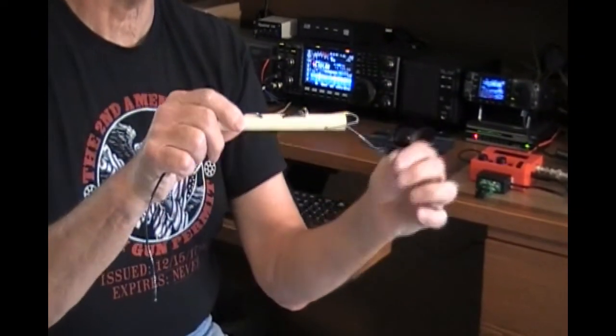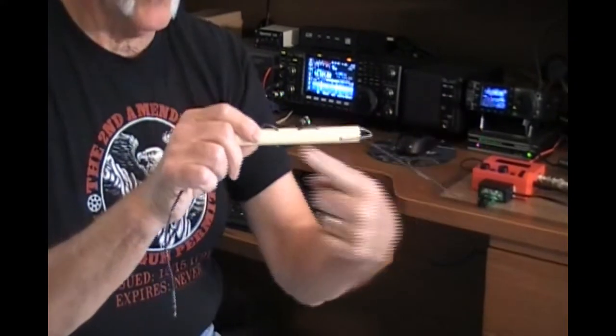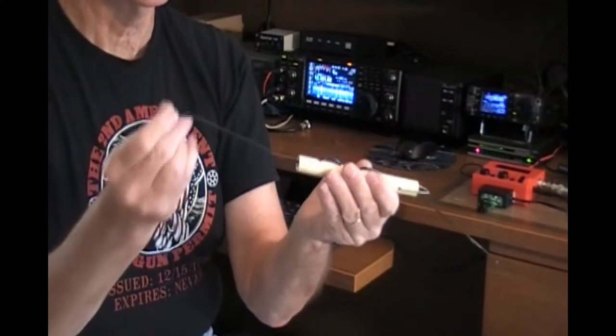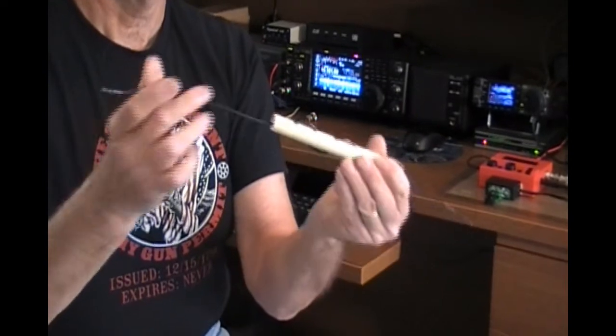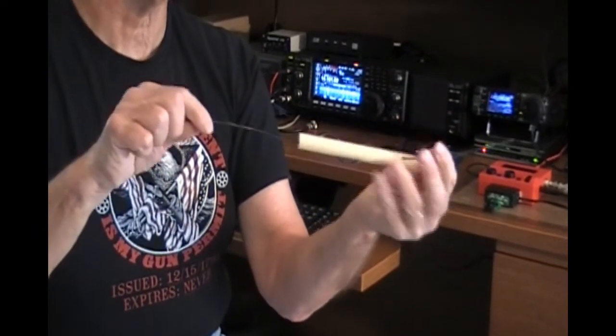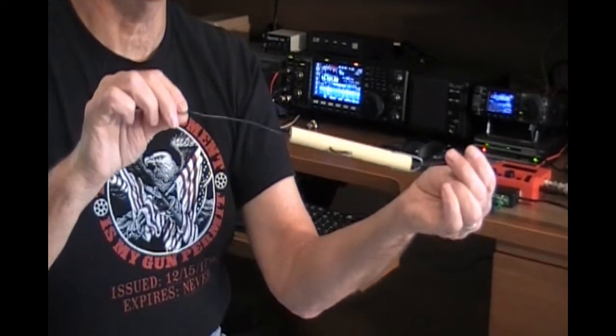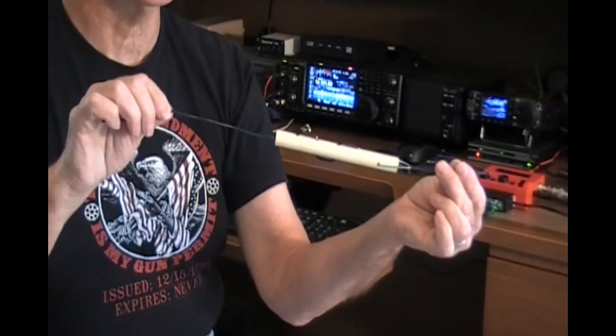When you're all done if you don't like this end sticking out you can weave it back through the end insulator. This will not ever pull out of there. So we're going to show you how to make this end insulator, you can do it in just a few minutes with a piece of PVC and a drill.